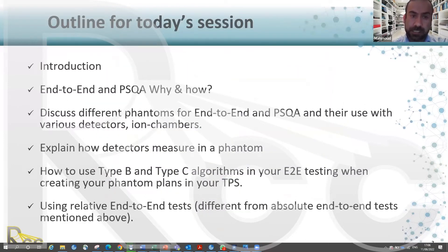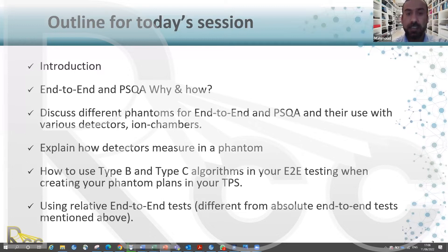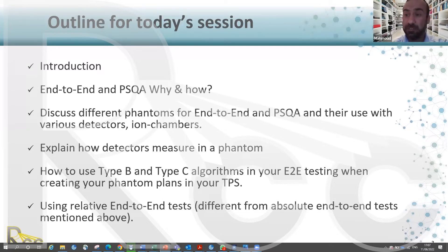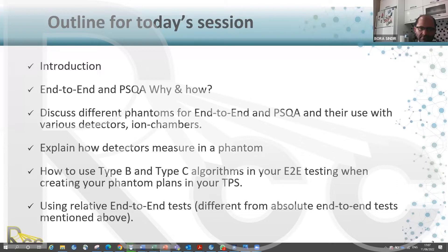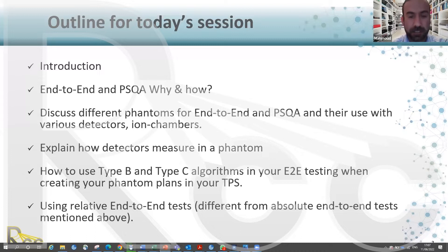Today's outline covers a quick introduction on the difference between 3D and IMRT, end-to-end and patient-specific QA — why we need these tests and how to do them properly — different phantoms for end-to-end and patient-specific QA, how detectors measure in a phantom, the difference between type B and type C algorithms, and what we mean by the relative end-to-end test.